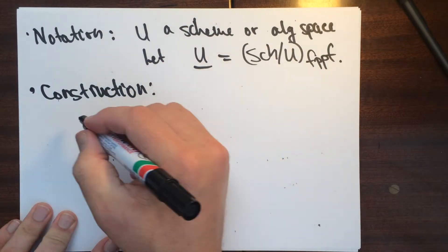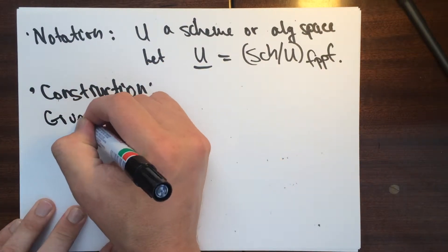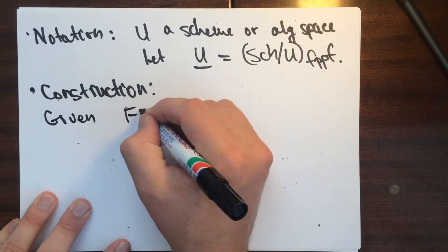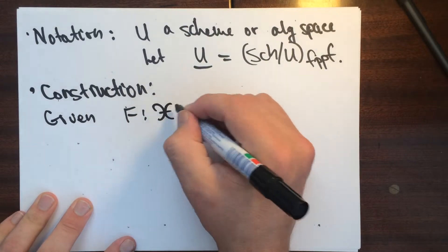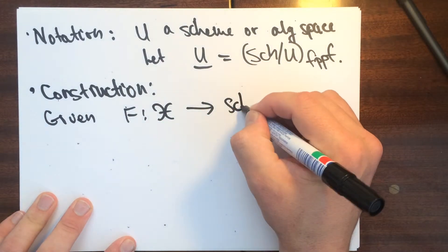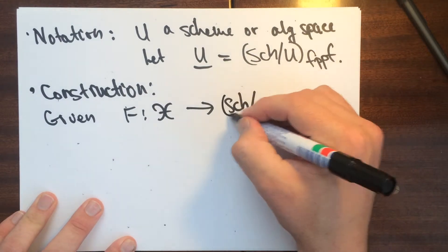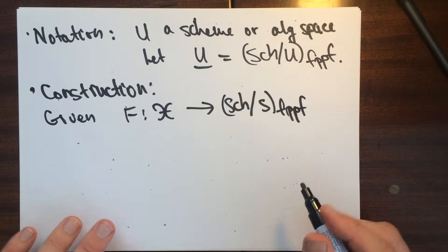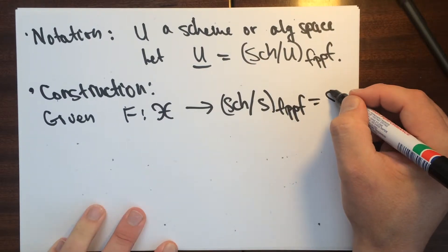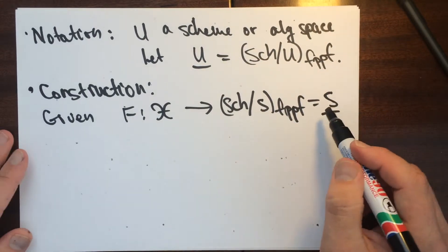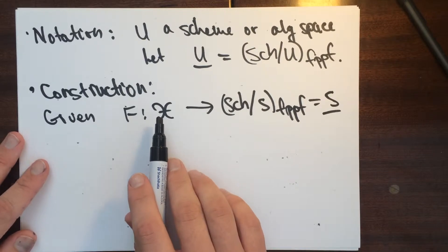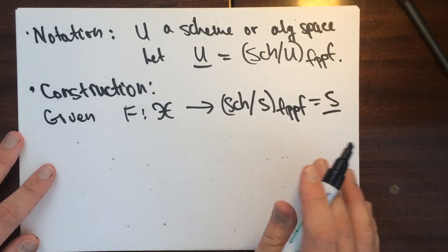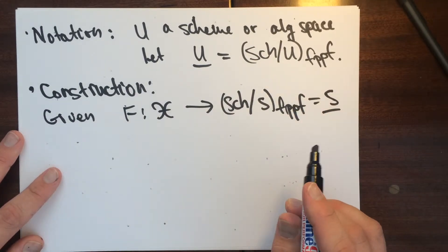So given a functor F from, let's say, from some category to these schemes here over some thing in the fppf site. So this is why I introduced the notation. Okay, so we should view this as kind of a, this will be a stack over S, okay, but it's really a category here.